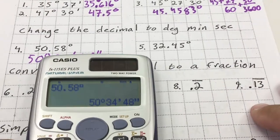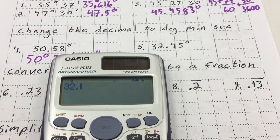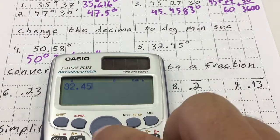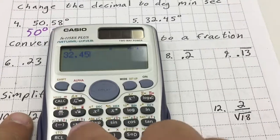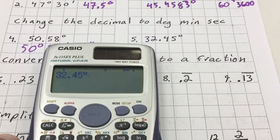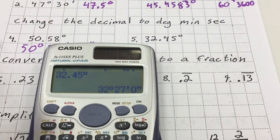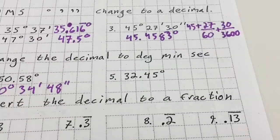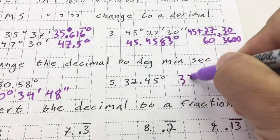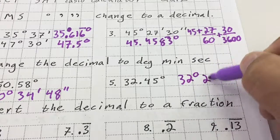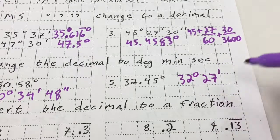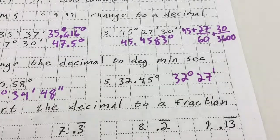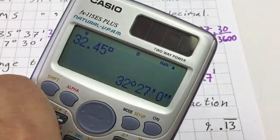For 32.45 degrees: type in 32.45, hit the degree button, hit equals, and there it is — 32 degrees, 27 minutes. I don't think I need to include the zero seconds.